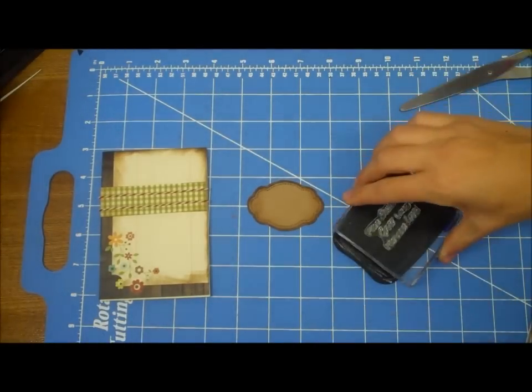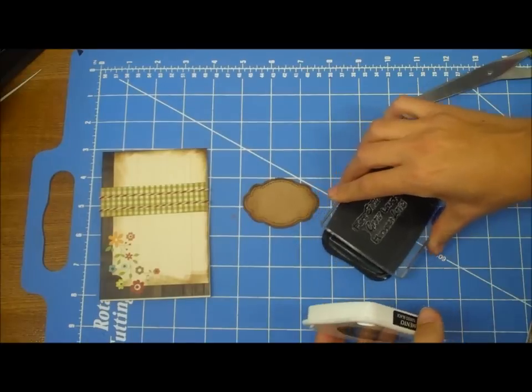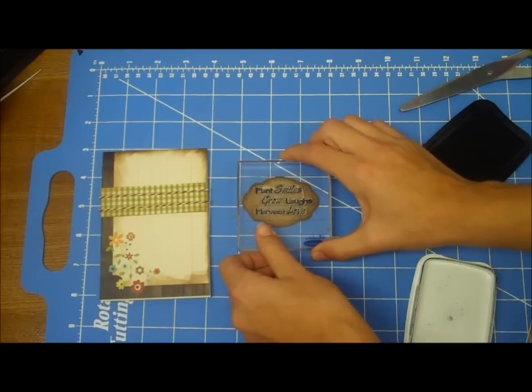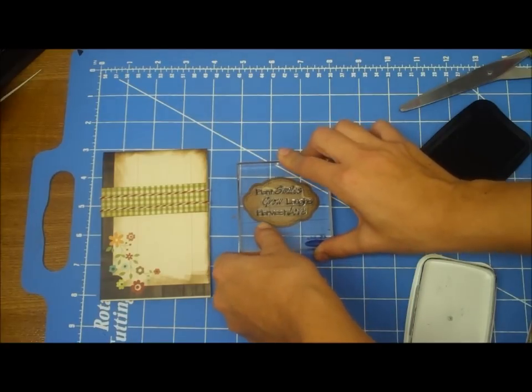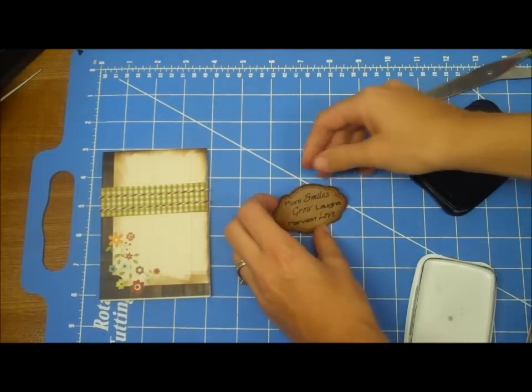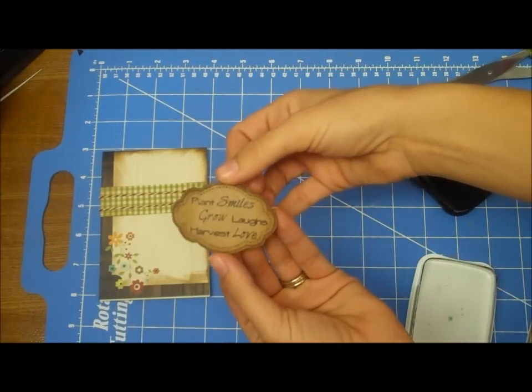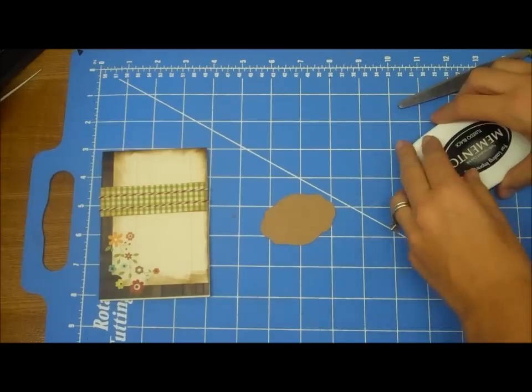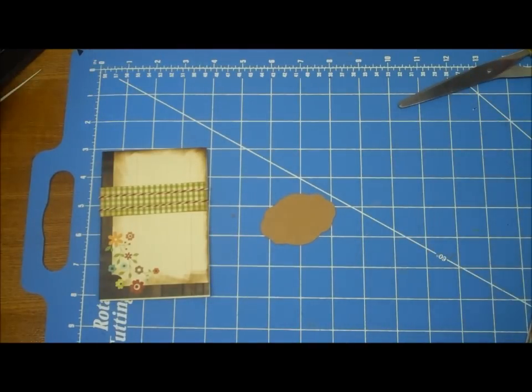So, I'm going to use my Memento ink. I'm going to ink this up, line it up inside this fancy, fun, new little label I got. And then I'm going to just pop dot it and stick it on over my little green gingham.